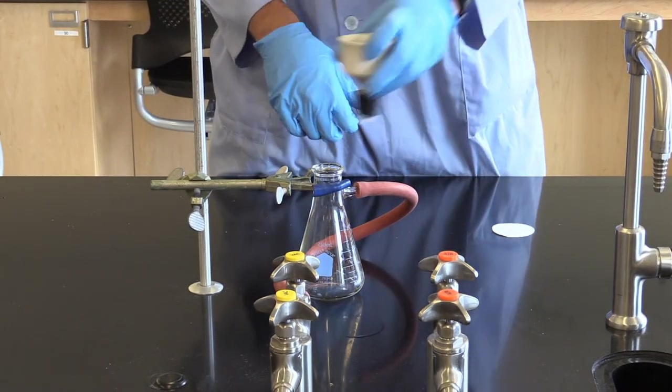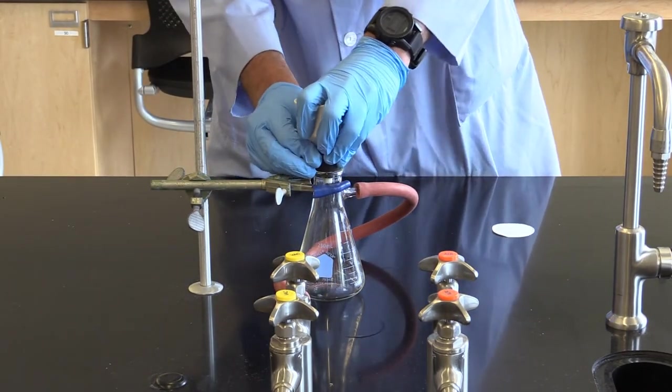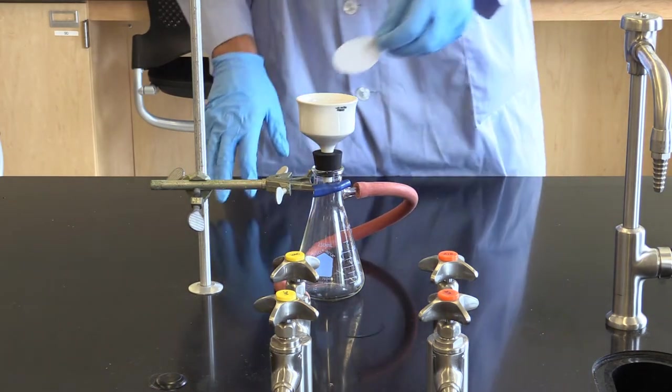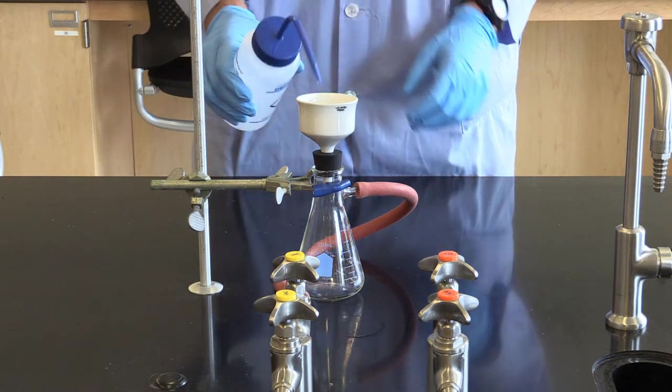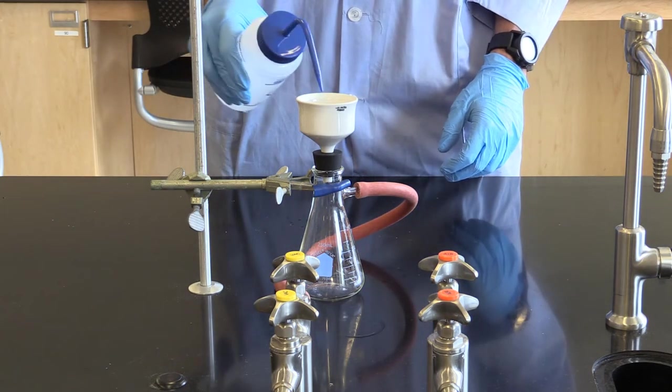Next, we're going to take the Buchner funnel, place it on top, and we're going to take the filter paper, place it inside the Buchner funnel. Next, using deionized water, we are going to wet the filter paper.